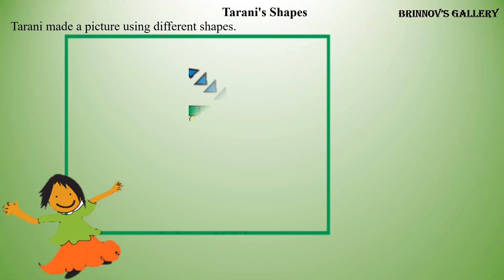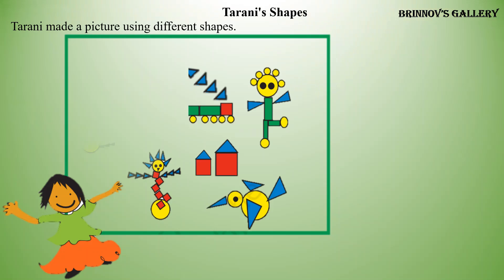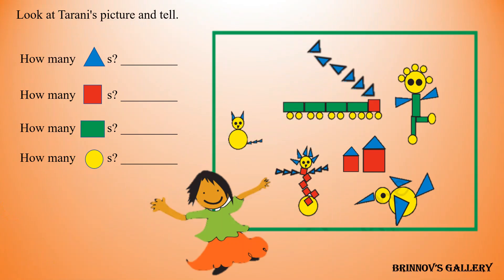Tarni's shapes: Tarni made a picture using different shapes. Look at Tarni's picture and tell — how many triangles? 30 triangles. How many squares? 9 squares. How many rectangles? 7 rectangles. How many circles? 24 circles.